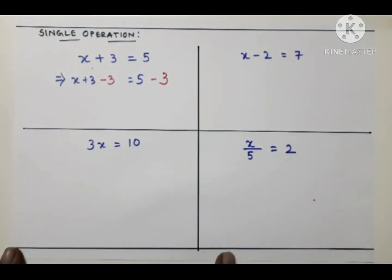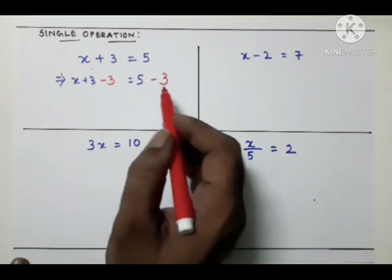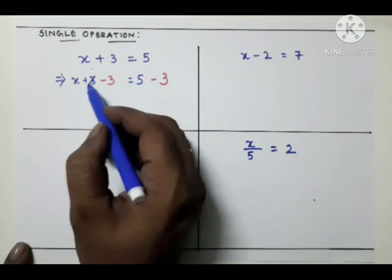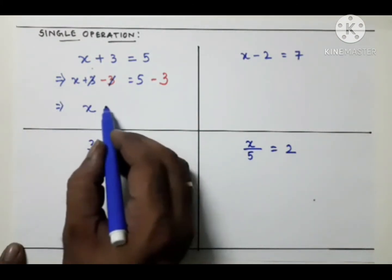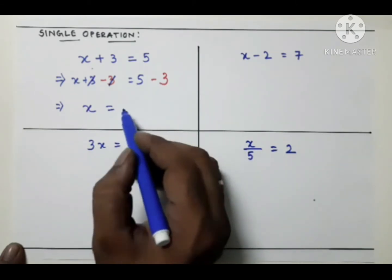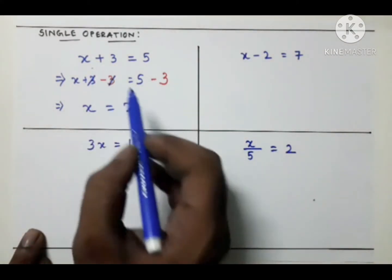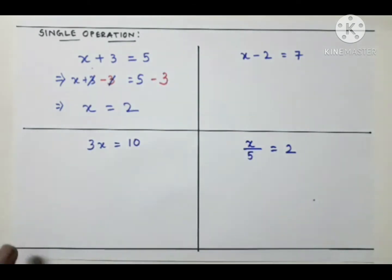Since +3 and −3 cancel each other (3 − 3 = 0), we are left with x = 5 − 3, so x = 2. We can verify: put x = 2 into the original equation: 2 + 3 = 5, and the right hand side is also 5, so our answer is verified.